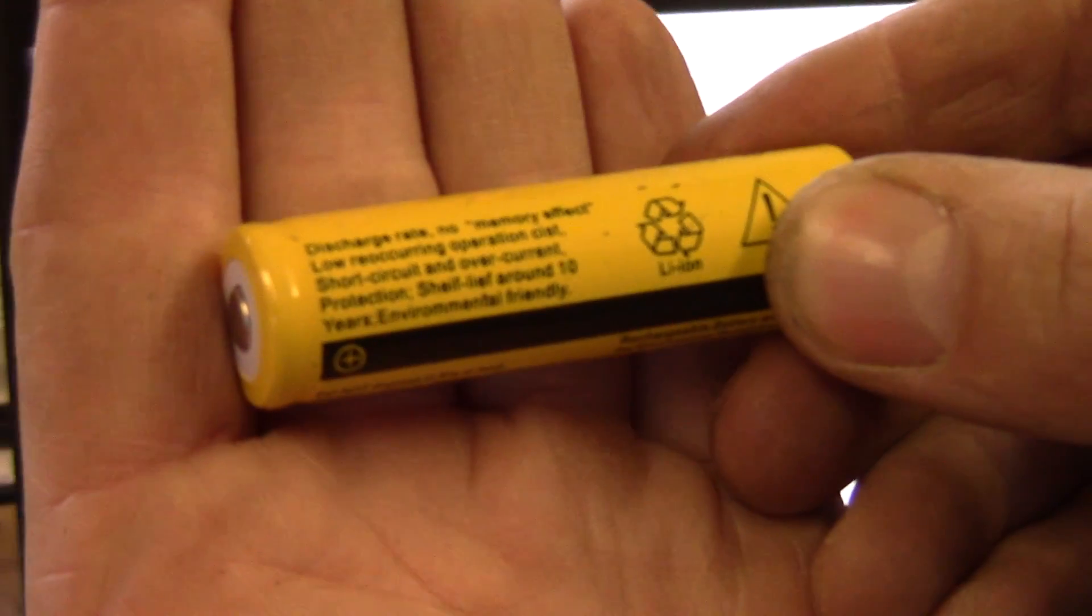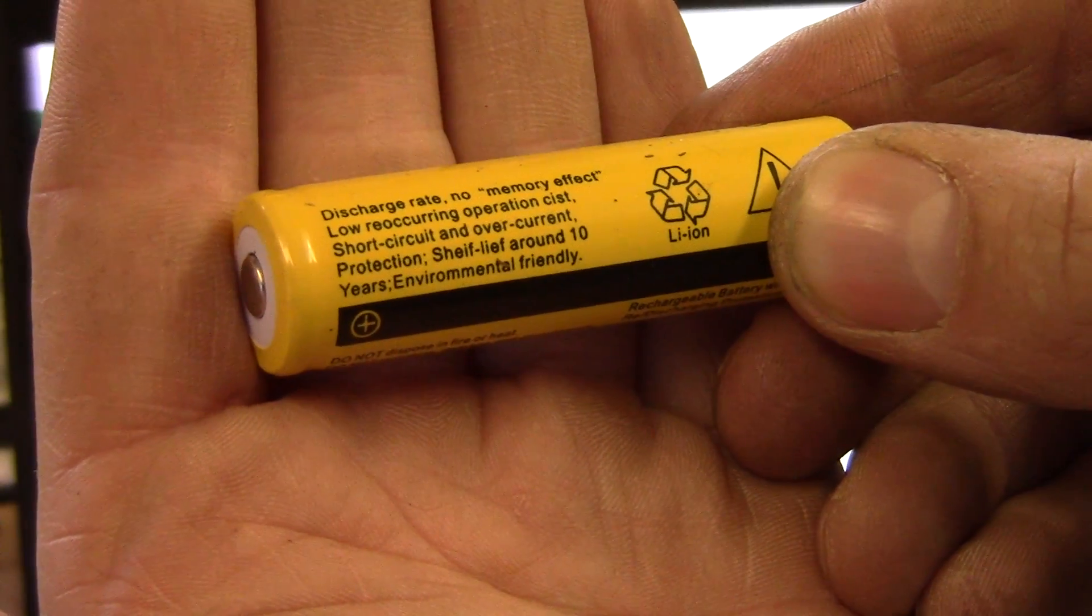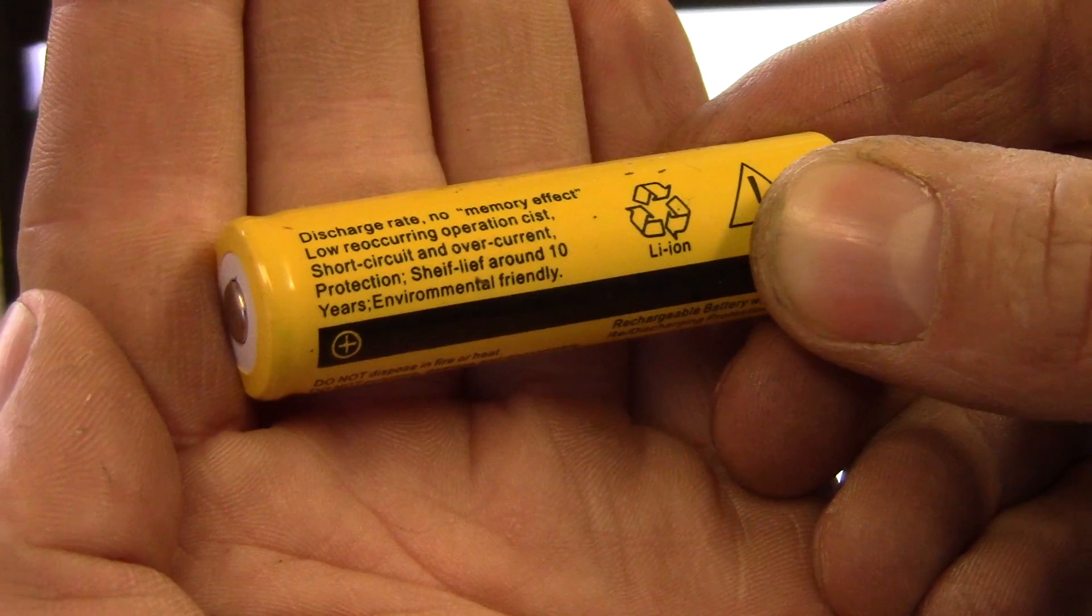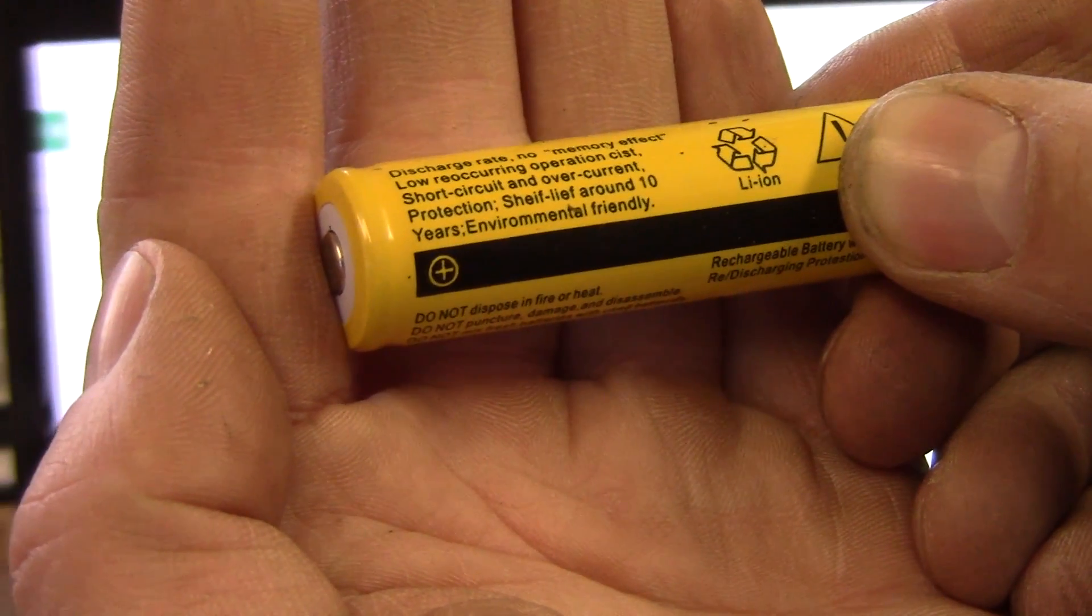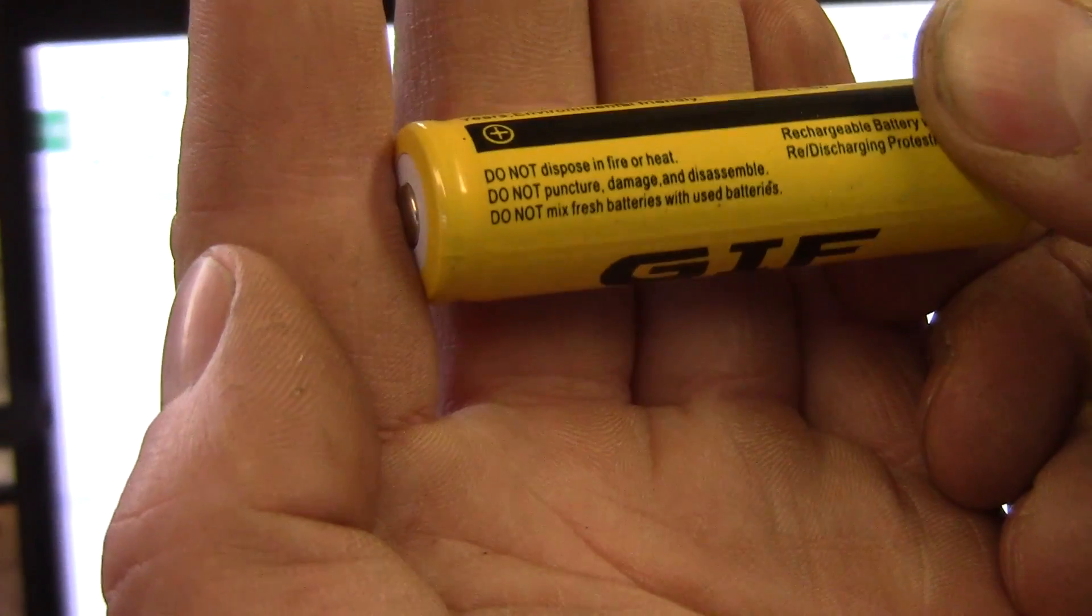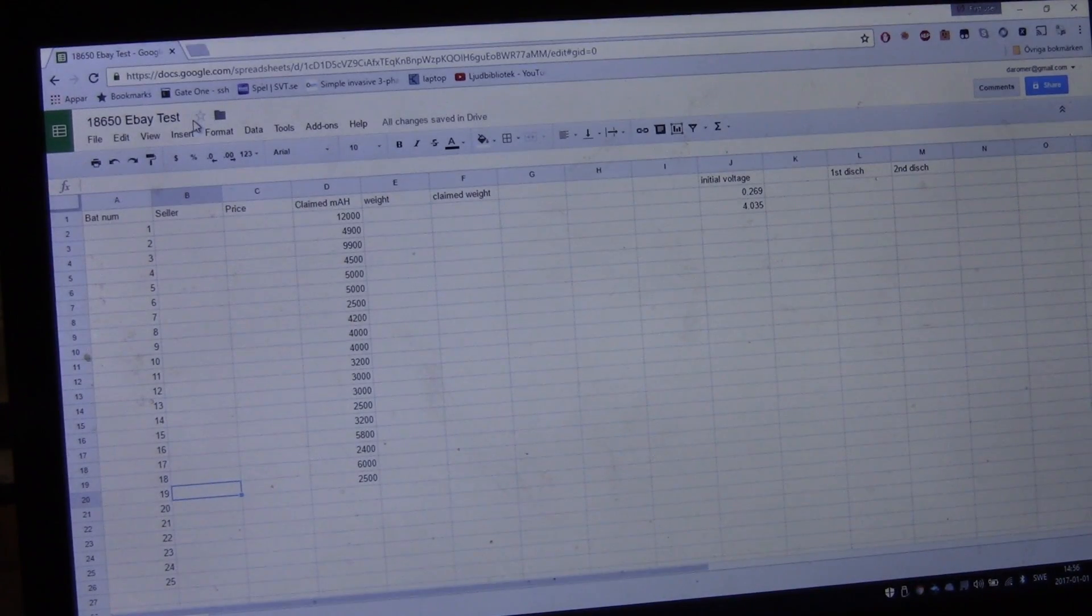For instance, this battery here says discharge rate, no memory effect, low recurring operation cost, short circuit and overcurrent protection, shelf life around 10 years, environmental friendly. So that's pretty interesting because it does state that they have overcurrent protection and everything like that. Some of the batteries even state a certain voltage when they cut off.